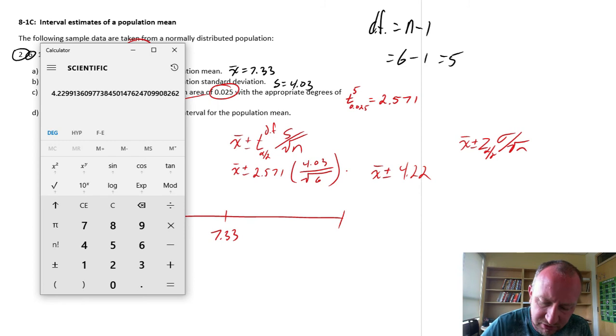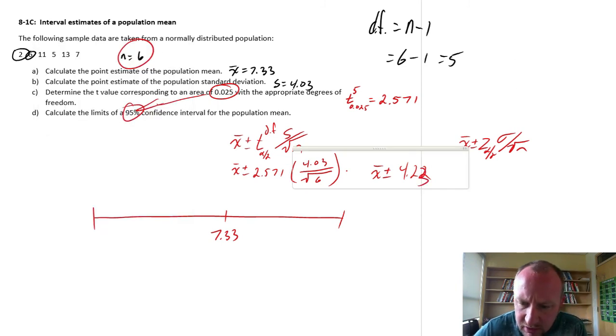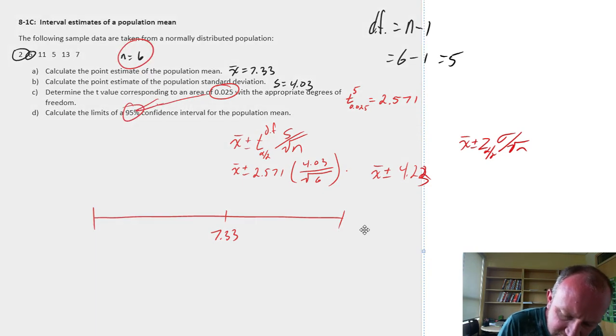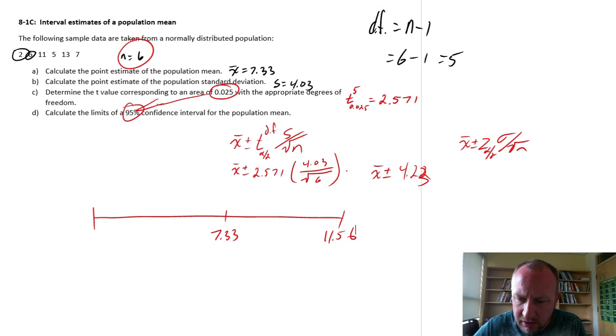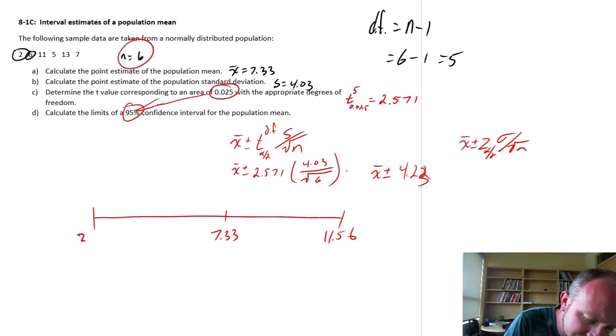So, now, I can look at my upper and lower limits. 7.33 plus 4.23, 11.56. And, 7.33 minus 4.23 is 3.1. So, there's that confidence interval.